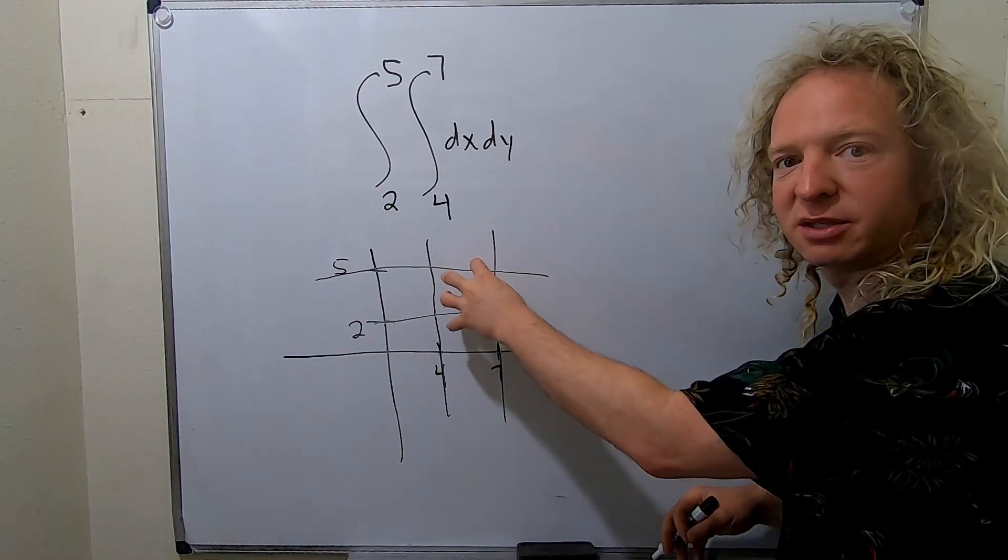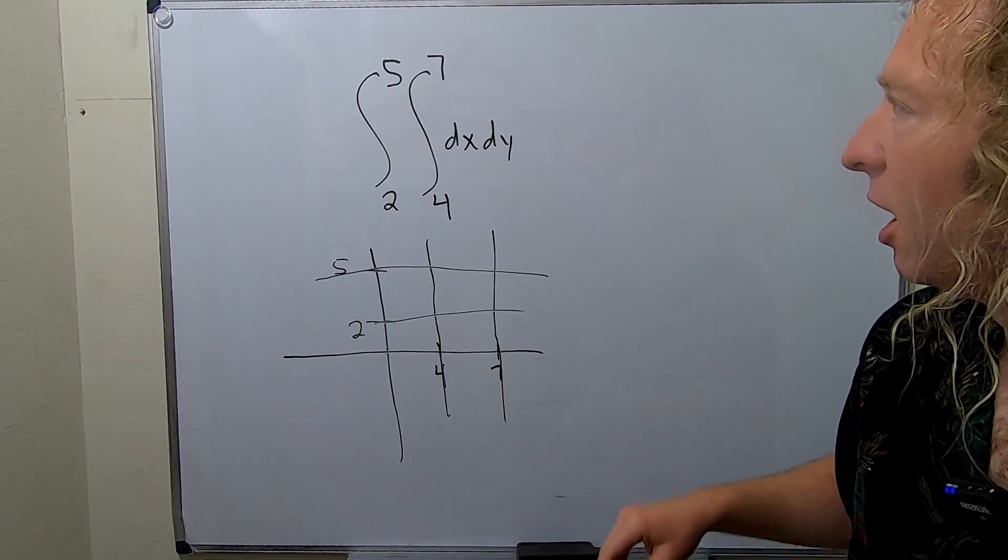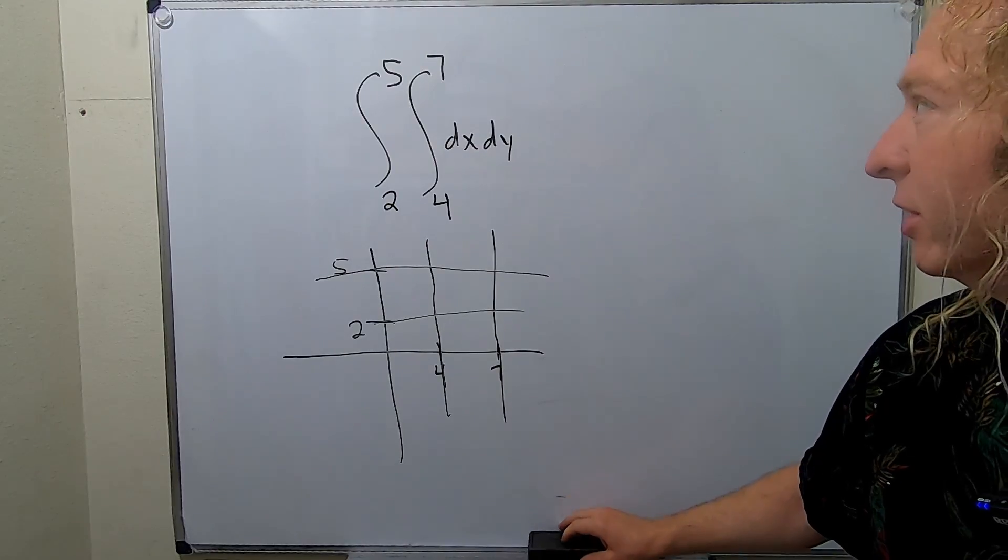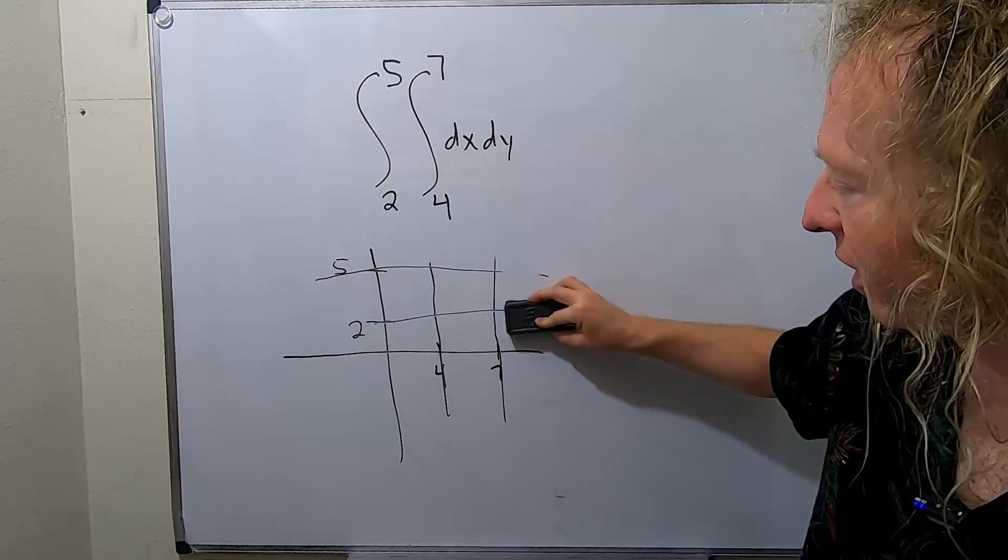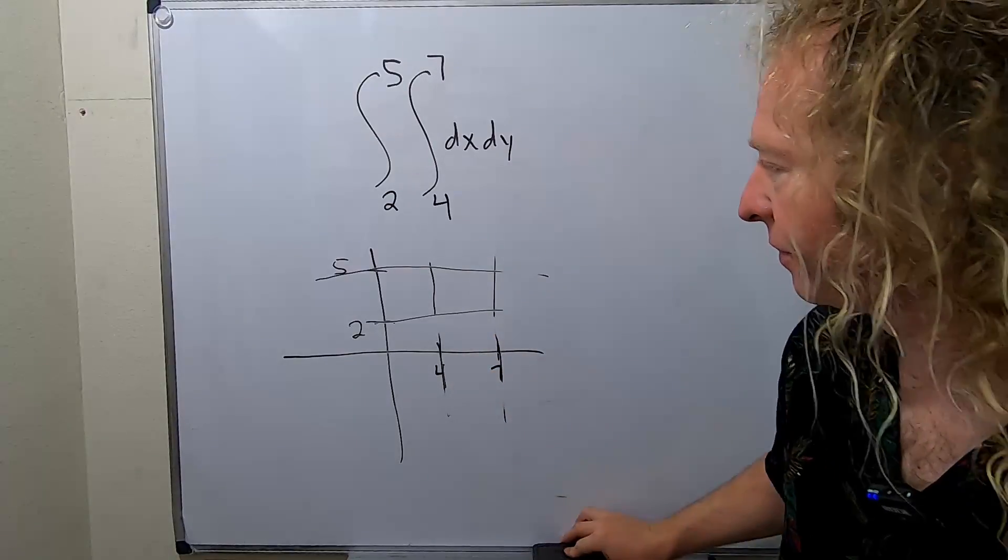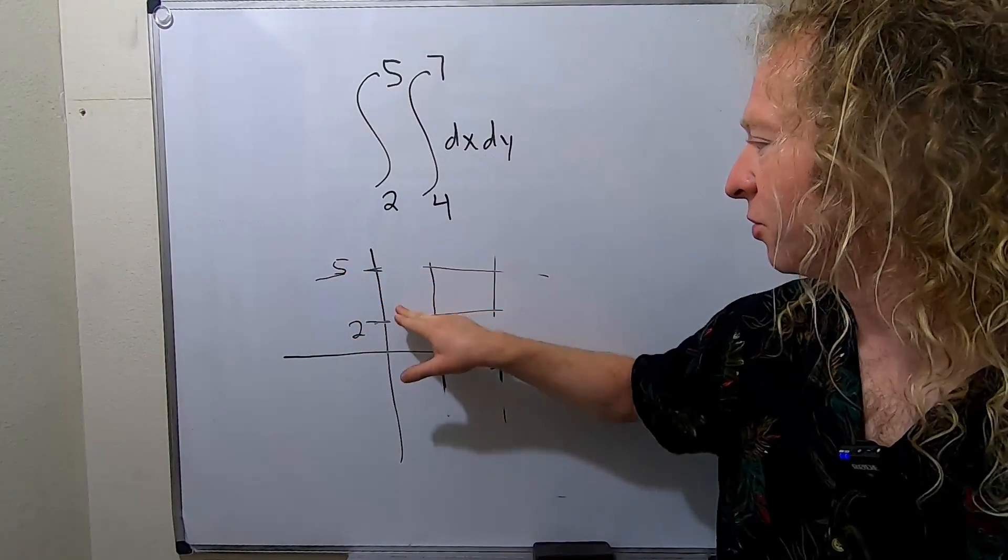And now you see what's left is this rectangle. Or actually a square I believe. Yeah this is a square because all the sides have the same length. So we're left with this beautiful square right here.